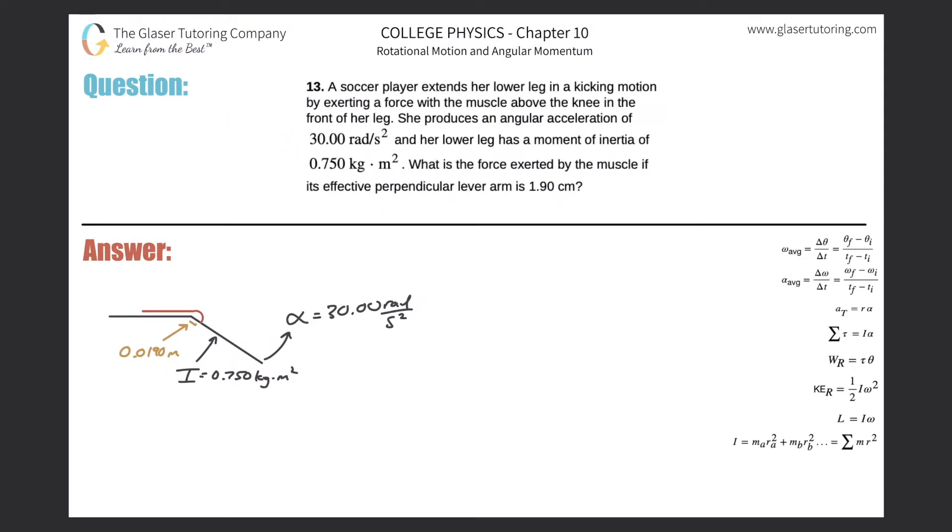13. A player extends her lower leg in a kicking motion by exerting a force with the muscle above the knee in the front of the leg, also known as the quadriceps. She produces an angular acceleration of 30 radians per second squared, and her lower leg has a moment of inertia of 0.750 kilogram meter squared. What is the force exerted by the muscle? If its effective perpendicular lever arm is 1.9 centimeters.